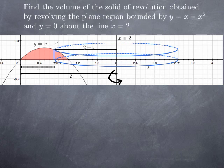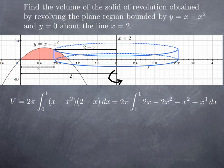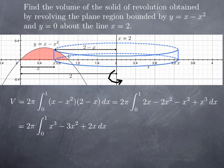Plugging that into our formula, the volume is 2π times the integral from 0 to 1 — because the interval of x values for the region is from 0 to 1 — of the height x minus x squared multiplied by the radius 2 minus x. Multiplying things through, we get 2x minus 2x squared minus x squared plus x cubed. Simplifying, we get 2π times the integral of x cubed minus 3x squared plus 2x between 0 and 1.